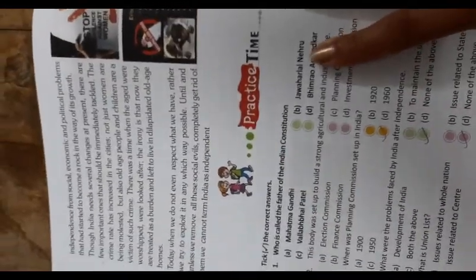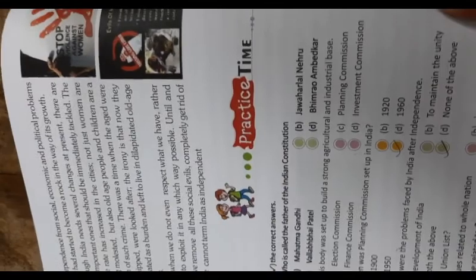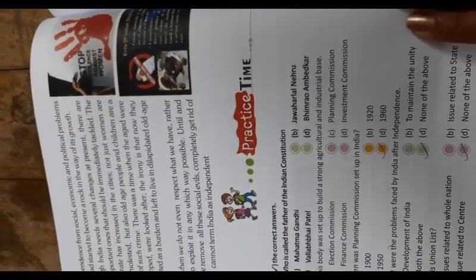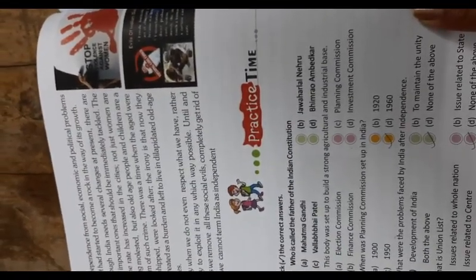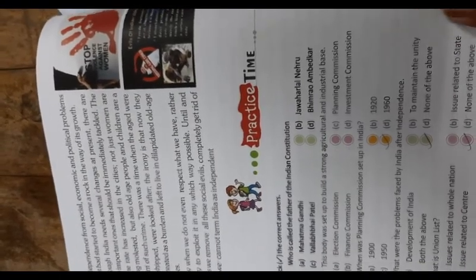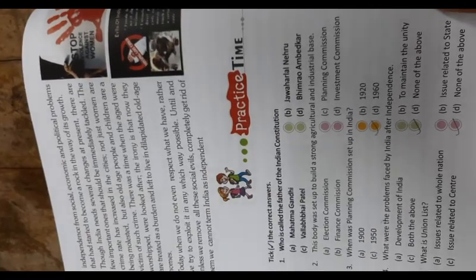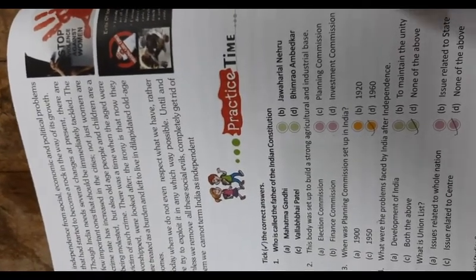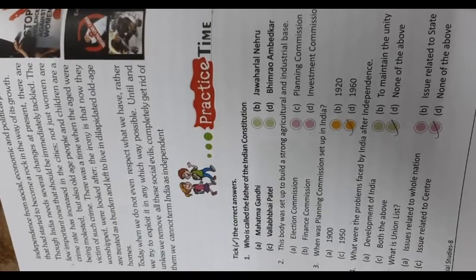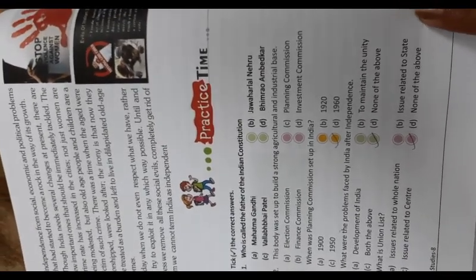Practice time: Who is called the father of the Indian Constitution? B.R. Ambedkar. This body was set up to build a strong agriculture and industrial base: Planning Commission. When was the Planning Commission set up in India? 1950. What was the problem faced by India after independence? Both the above issues.